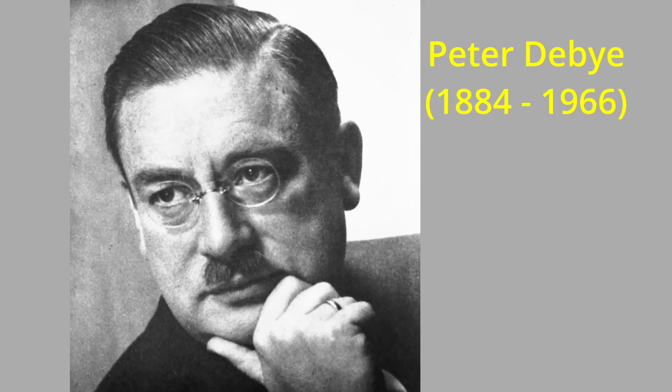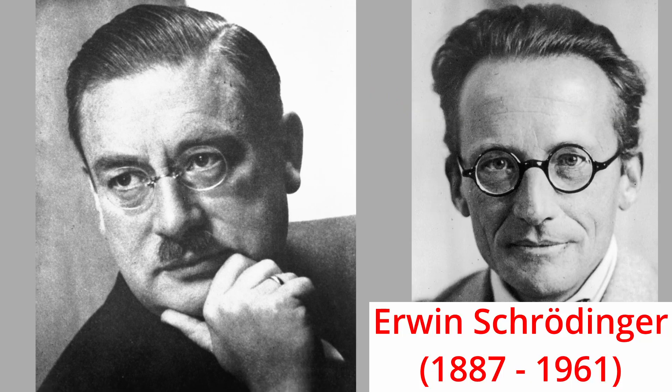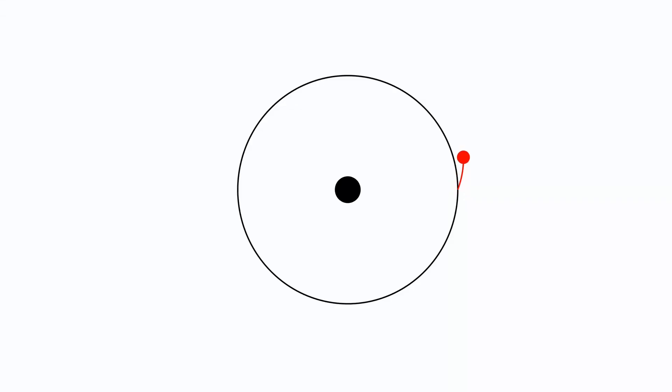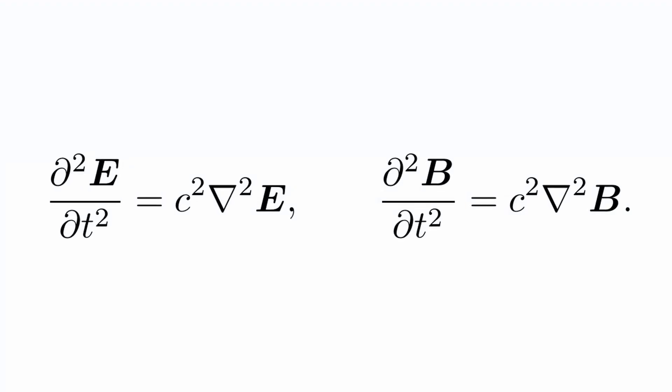After De Broglie's thesis was published, Professor Peter Debye in Zurich asked Erwin Schrödinger to give a seminar on De Broglie's work. At the end of the seminar, Professor Debye remarked that he considered De Broglie's theory to be rather childish. De Broglie had modeled the electron as a wave confined to a circle in space going around an atomic nucleus. If the electron was indeed a wave, then it should satisfy a wave equation, something like the equation satisfied by light.